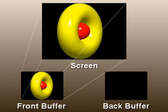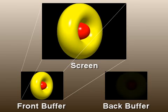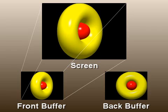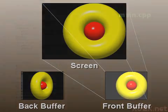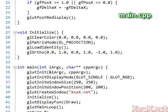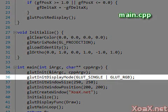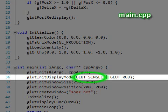The screen image is taken from the front buffer and we do our drawing on the back buffer. When we are finished drawing, we swap the front and back buffers so the back image is now displayed. To switch to double buffering, we need to change the display mode. In line 36, we switch the mode from GLUT_SINGLE to GLUT_DOUBLE.